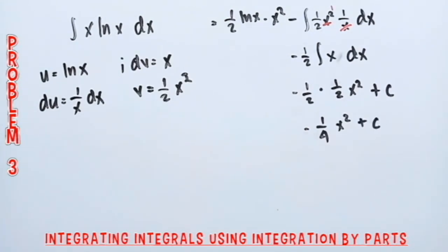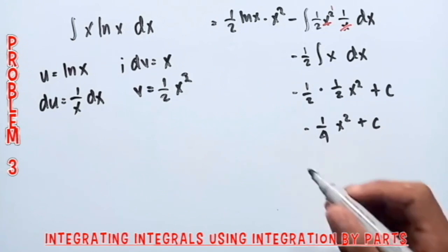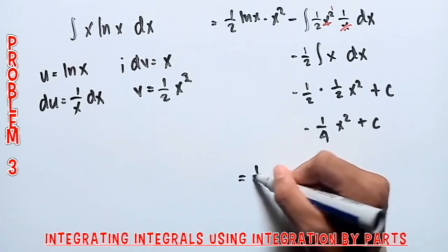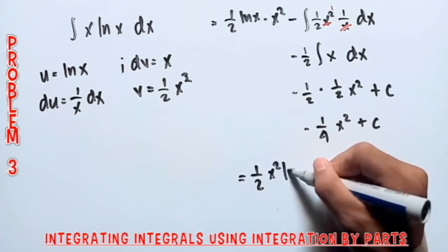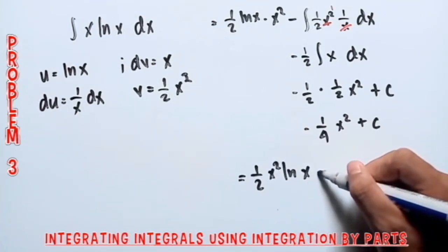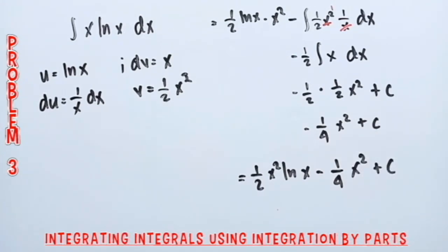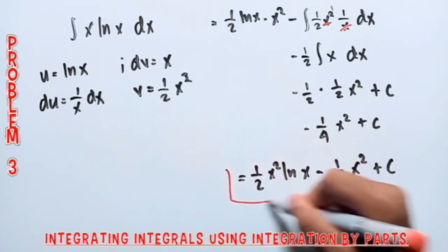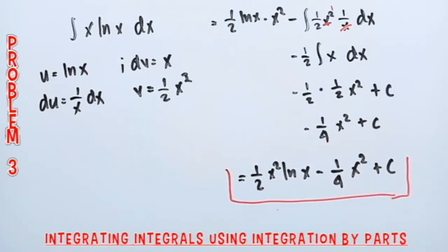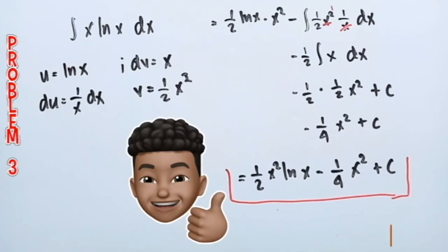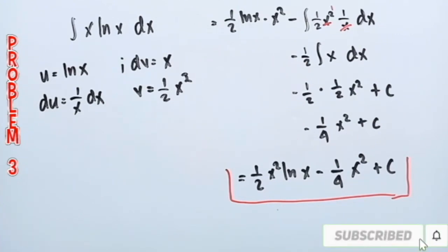So our final answer is one-half x squared ln(x) minus one-fourth x squared plus C. We can simplify this further by factoring out one-half x squared as the common factor. Let's proceed to the fourth example.